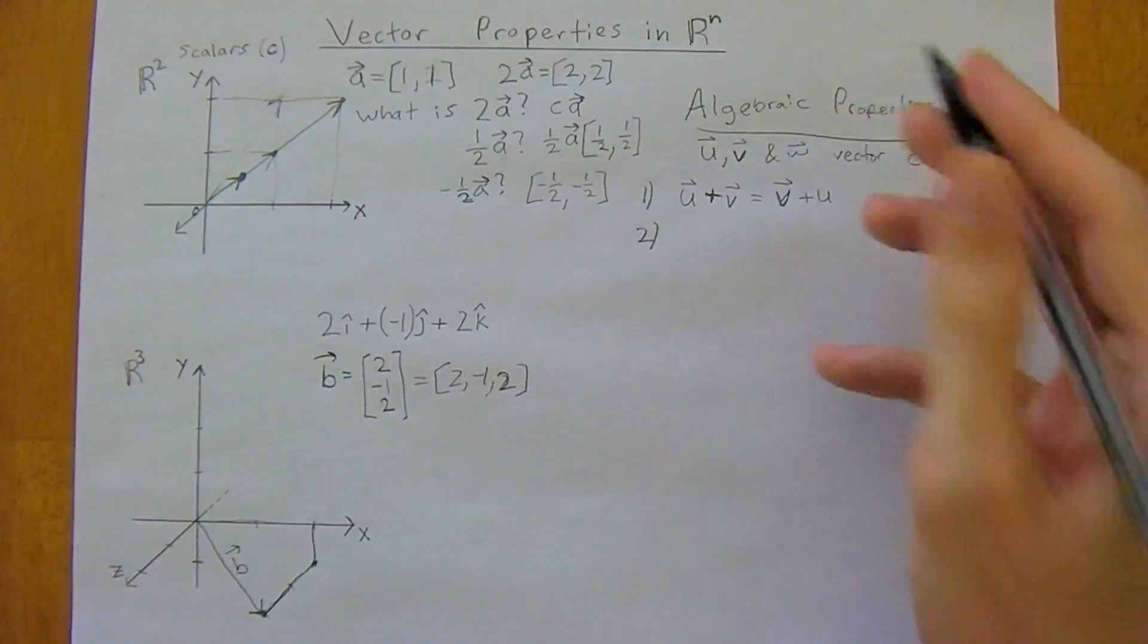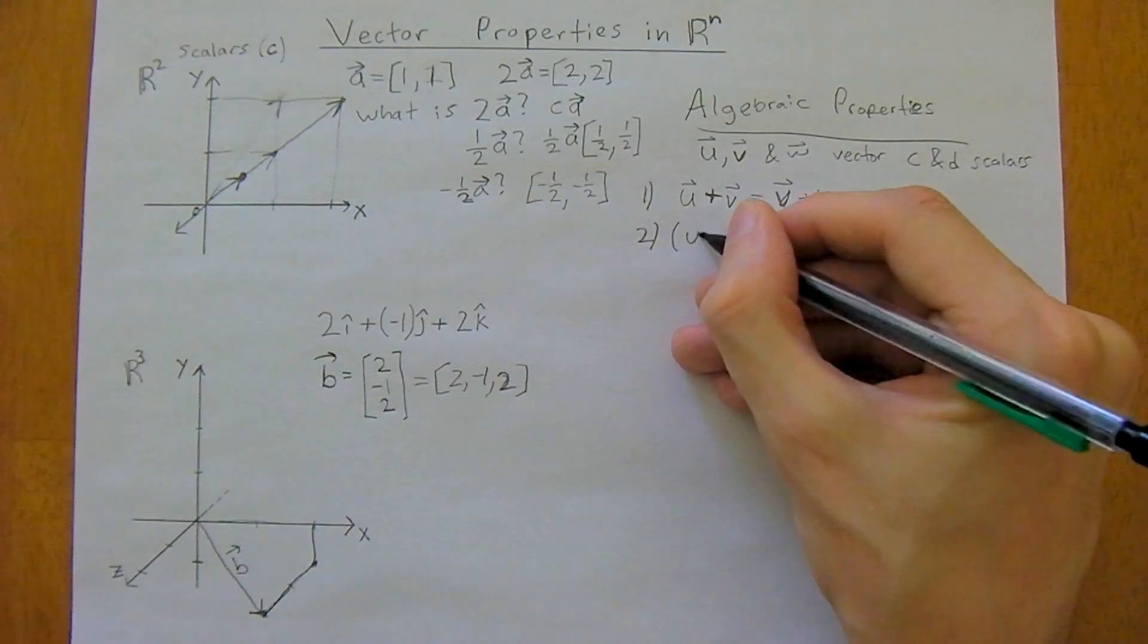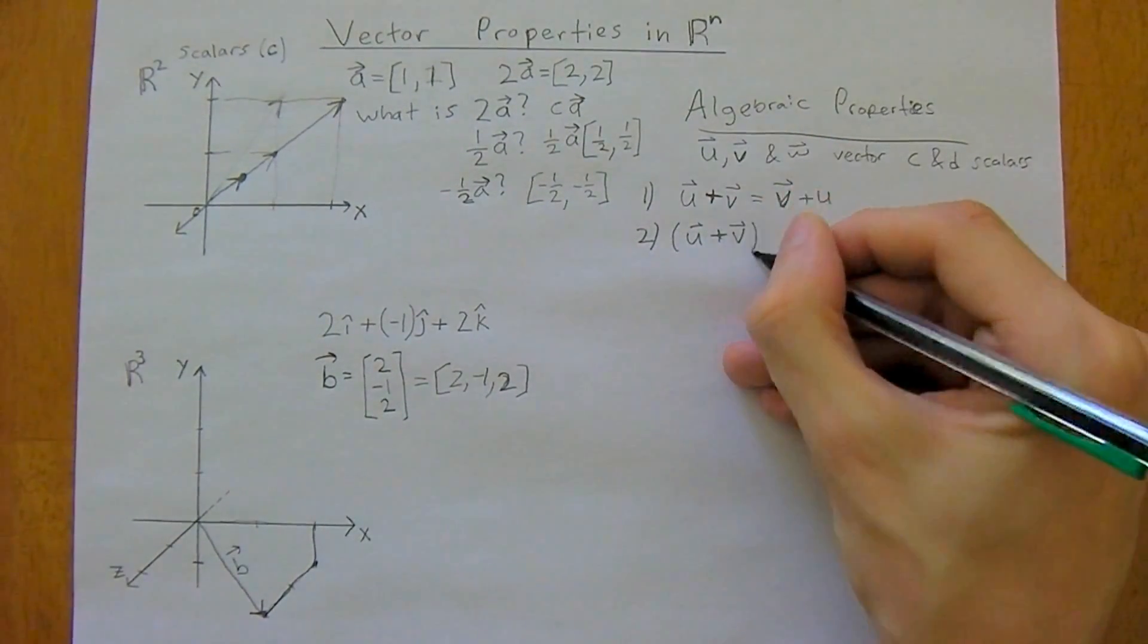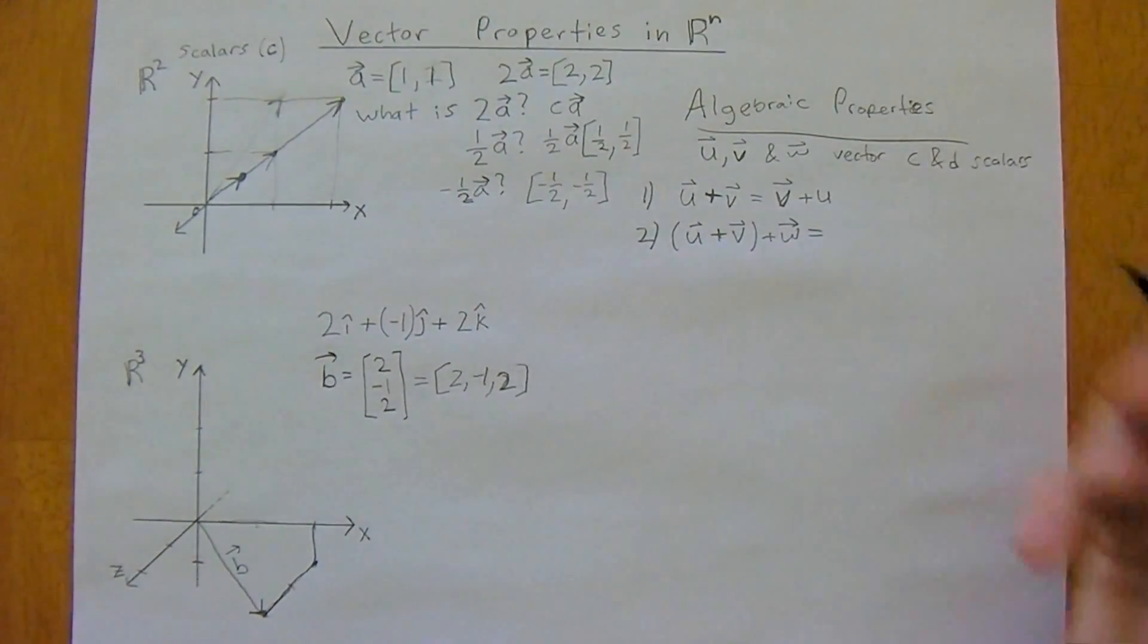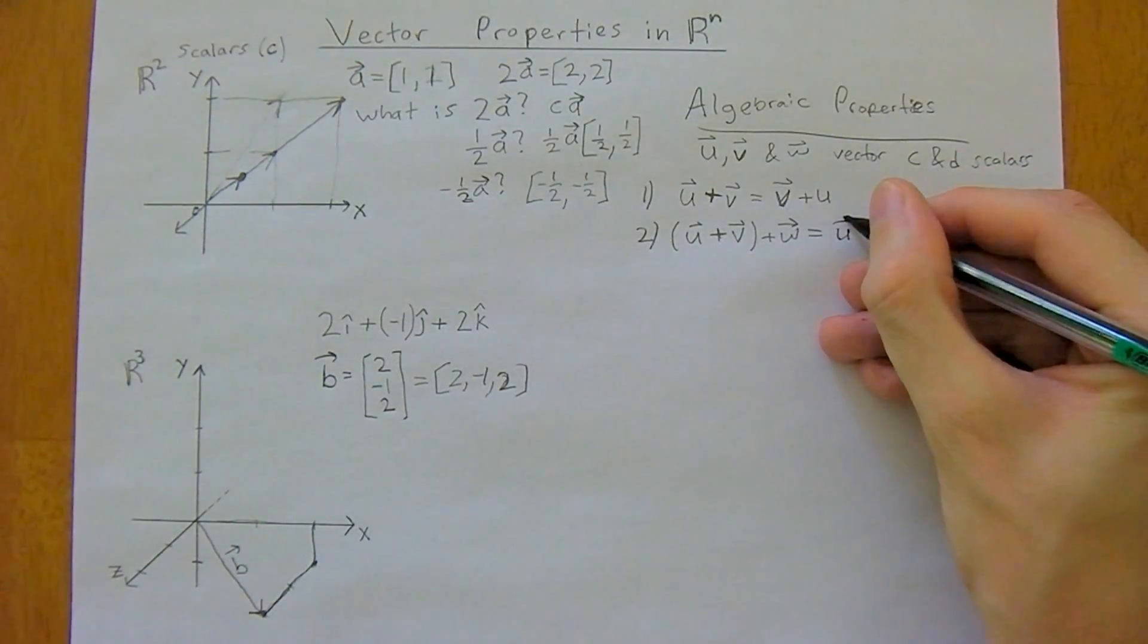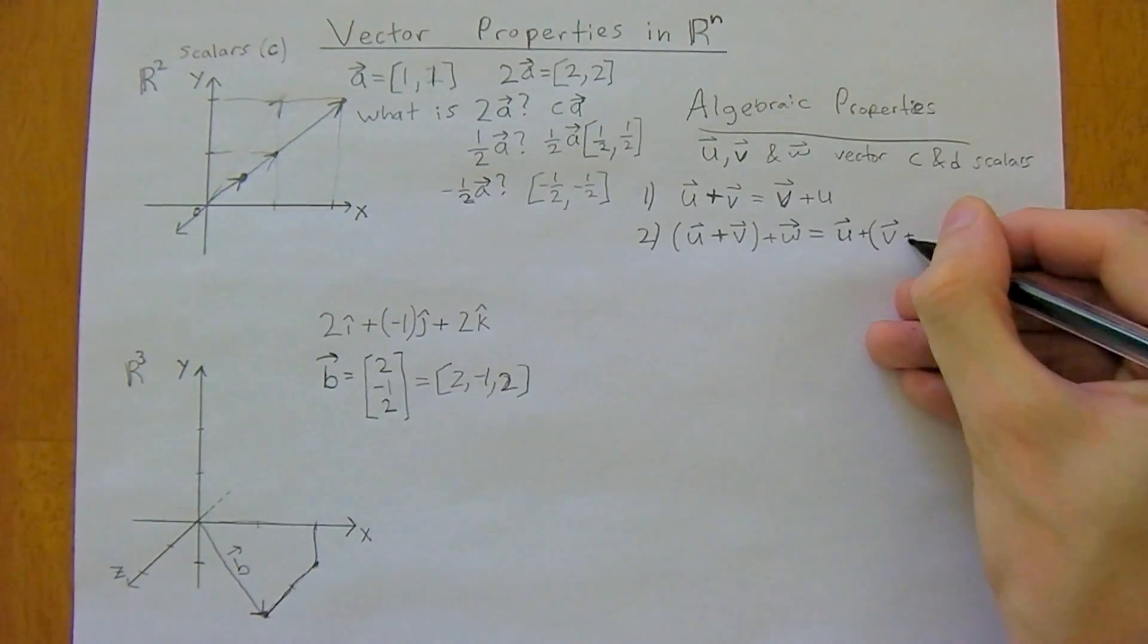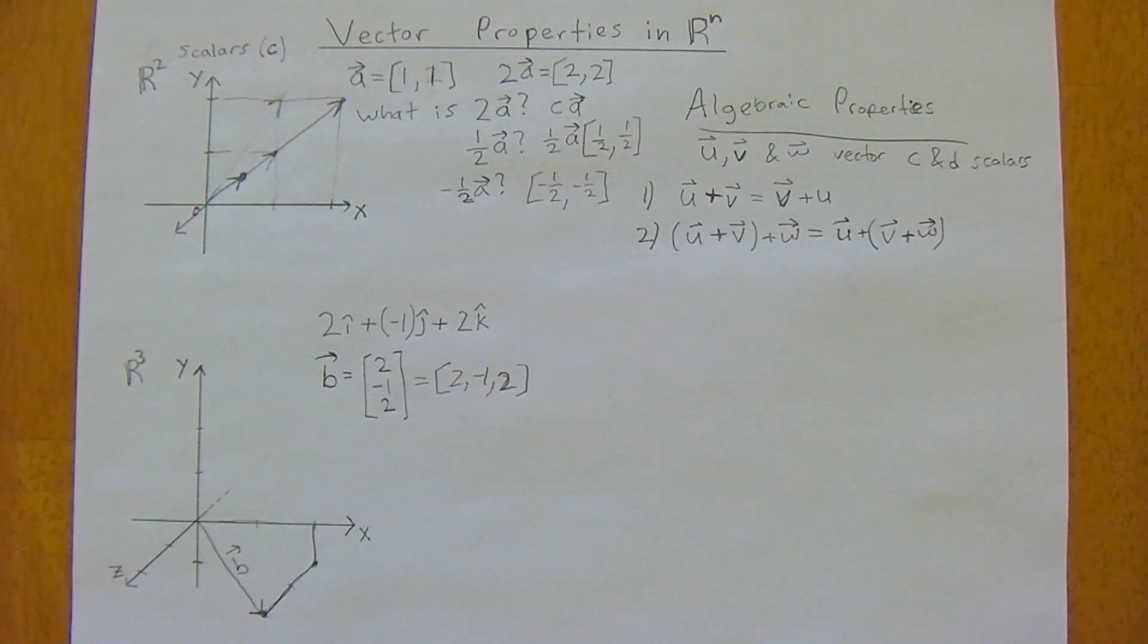So the second property now, and it's very important to learn these properties, this will help you a lot as you go deeper into this, so u plus v plus w is the same as u plus v plus w, and so we call this associative.